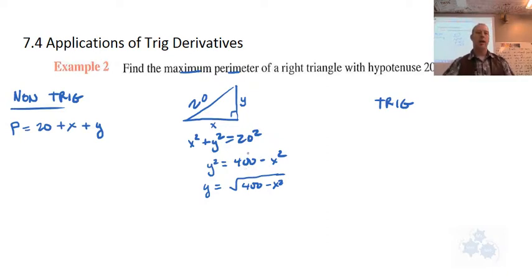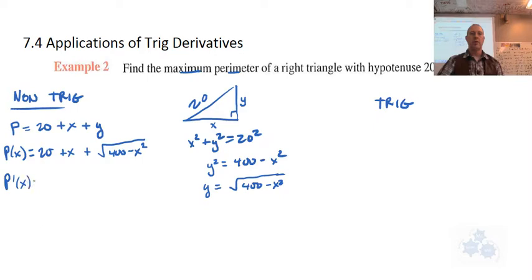So this is y. Now we can write the perimeter in terms of x: P(x) = 20 + x + √(400 - x²). Is everyone okay with that so far? We haven't used sine, cosine, or tan at all for this. This is how you would do this question in Chapter 4. In order to find the critical number, we're going to take the derivative of this.